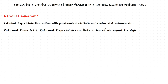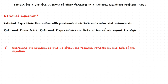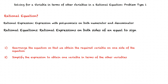We are going to solve for one variable in terms of the other variables in a rational equation. In order to solve problems of this type, we follow these steps. First, we rearrange the equation so that we obtain the required variable on one side of the equation. Finally, we simplify the expression to obtain one variable in terms of the other variables.